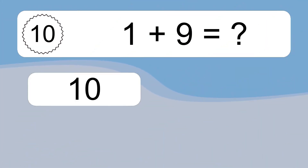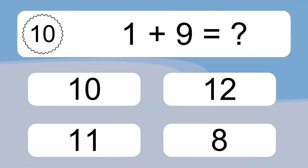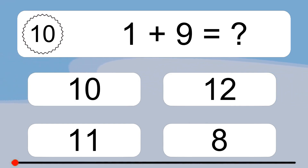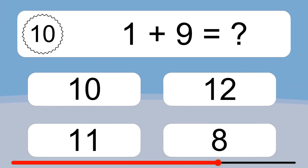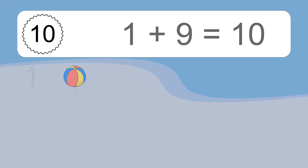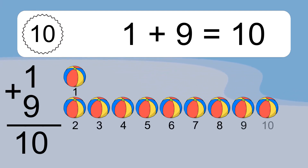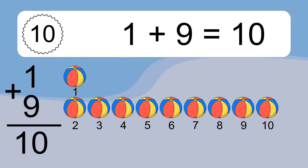1 plus 9 equals what? 1 plus 9 equals 10. Let's count it. 1, 2, 3, 4, 5, 6, 7, 8, 9, 10.